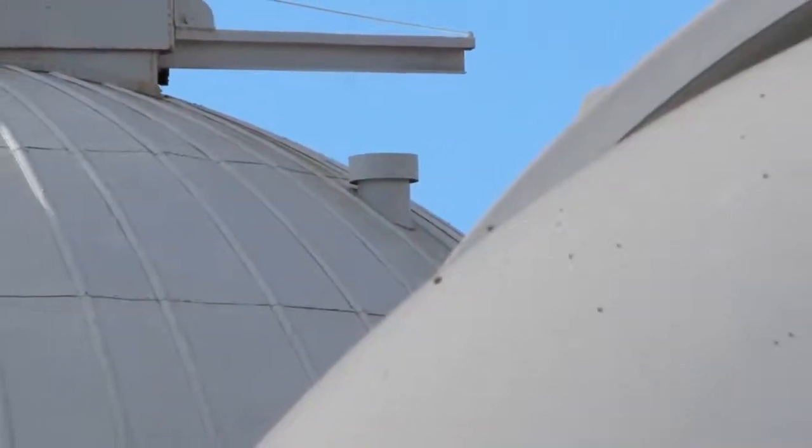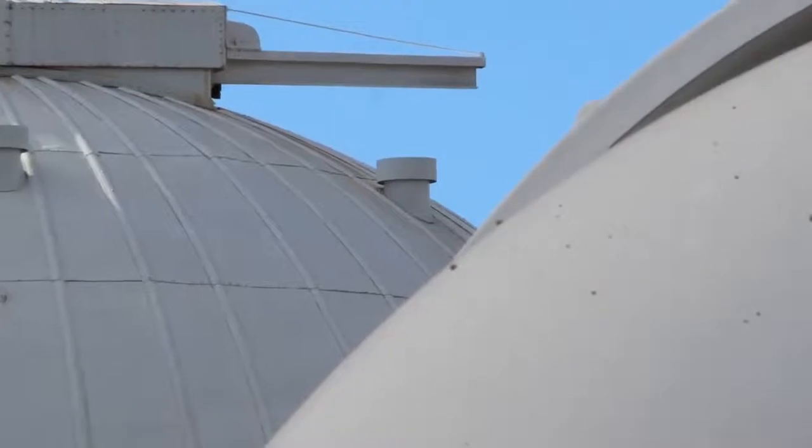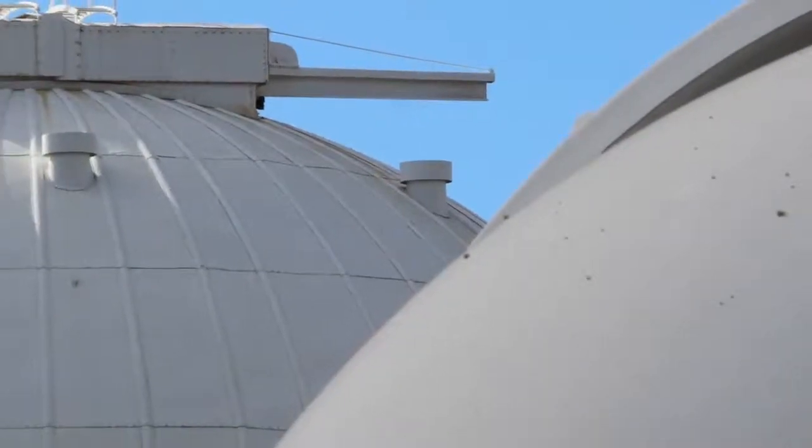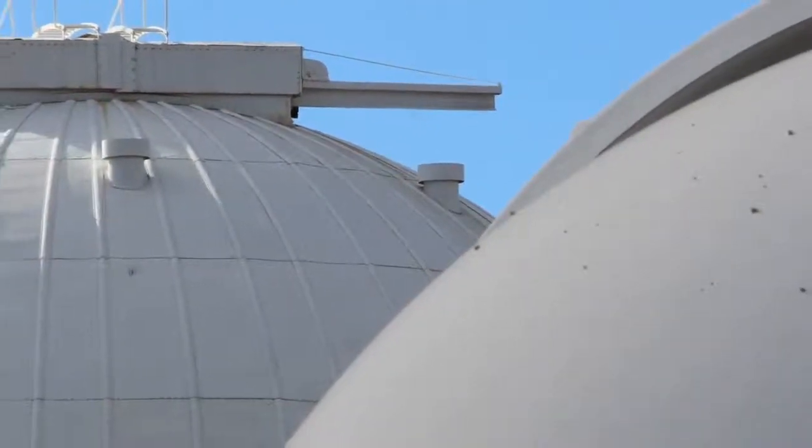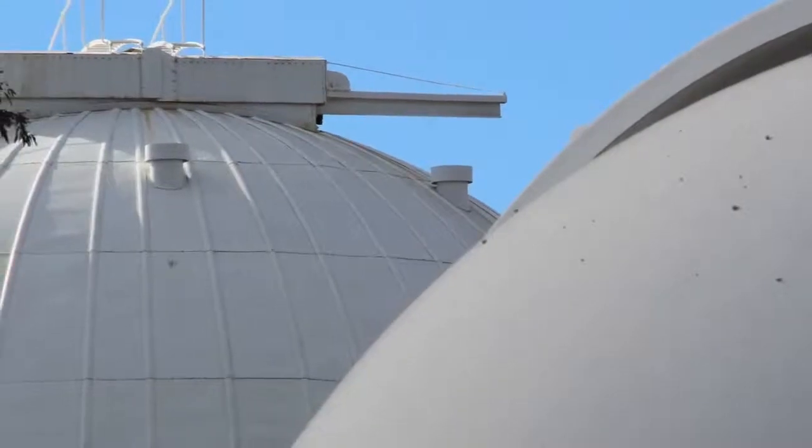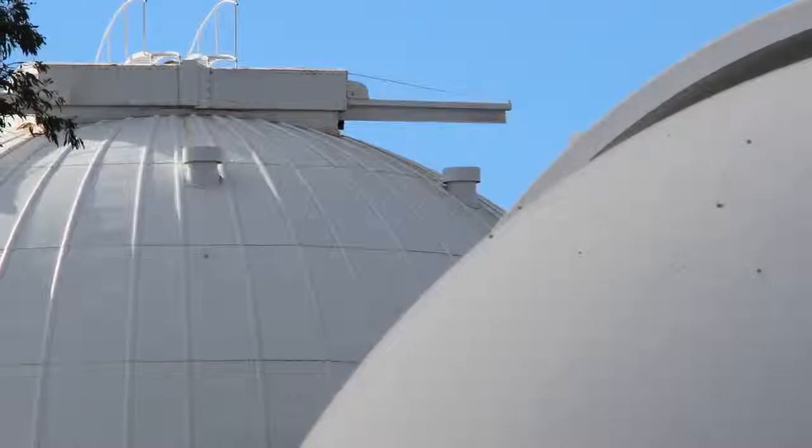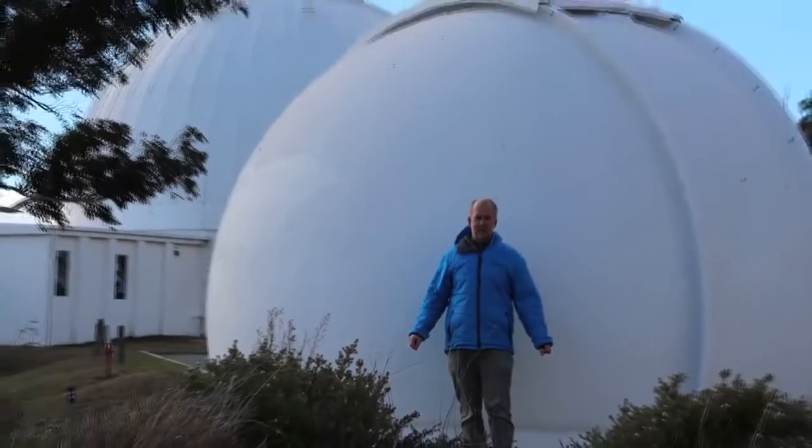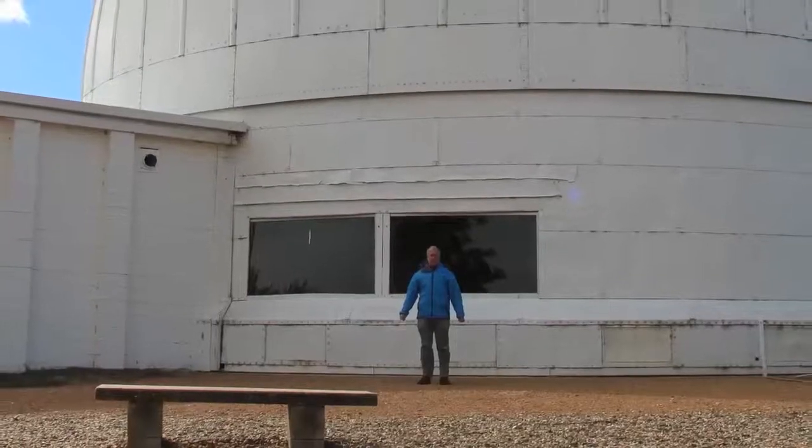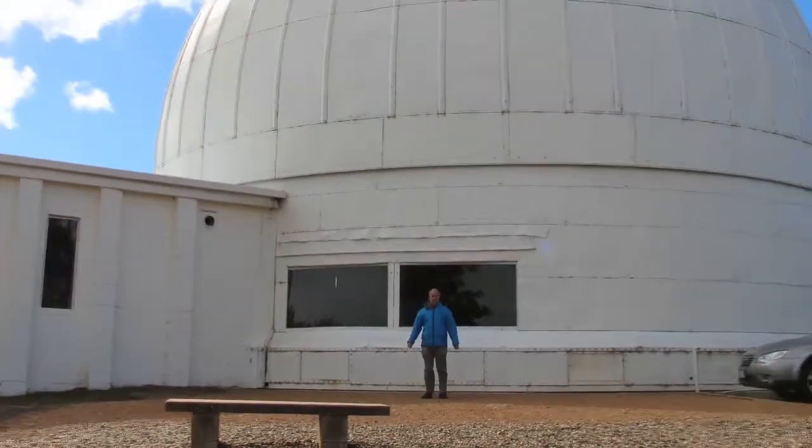But far more is going on here than meets the eye at first. As we zoom out, we see that the two telescopes are intrinsically very different size. If we judge their size relative to Paul Francis, you will see that one is very small and the other very, very large.